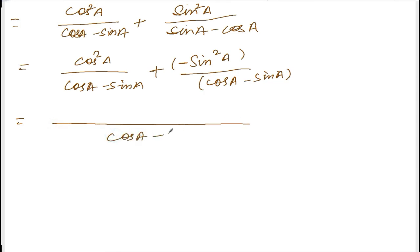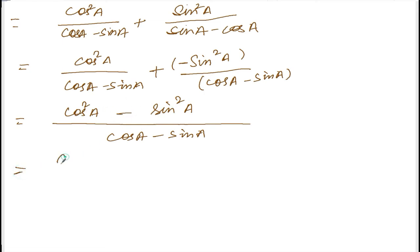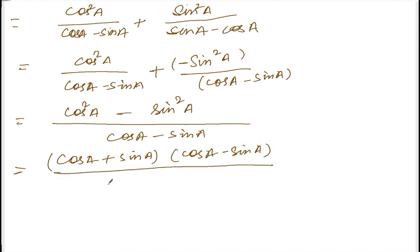With the same common denominator, we get cos squared(a) minus sin squared(a), all divided by cos(a) minus sin(a). Using the identity a² minus b² equals (a+b)(a-b), this becomes cos(a) plus sin(a) times cos(a) minus sin(a), divided by cos(a) minus sin(a). The common factor cancels out.